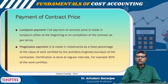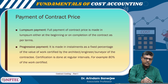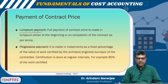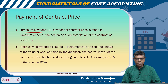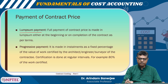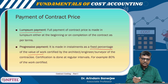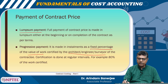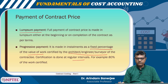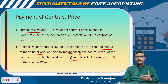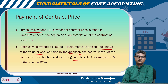The payment of a contract price can be made in two ways. One is lump sum — full payment of contract price is made either at the beginning or on completion of the contract as per terms. And progressive payment — it is made in installments as a fixed percentage of the value of work certified by an architect, engineer, or surveyor of the contractee. This certification is done on regular intervals, for example 40 percent work completed, 80 percent work completed.